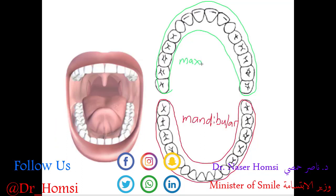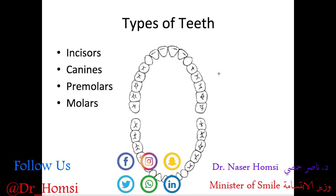Now for types of teeth — they're oriented by their location, shape, and function. The incisors refer to the front four teeth, and this is the same for both the maxillary arch and the mandibular arch. The incisors are used for incising or slicing food, they're important for aesthetics because they're in the front, and they're important for phonetics — like pronouncing F and V sounds, where your incisors contact your lower lip.